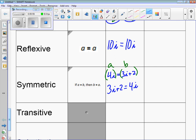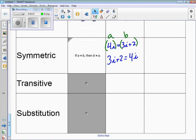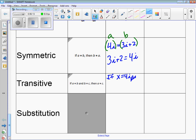Transitive property, always the biggest property. If a equals b and b equals c, then a equals c. So if x equals 4i and 4i equals y, then x has to equal y.